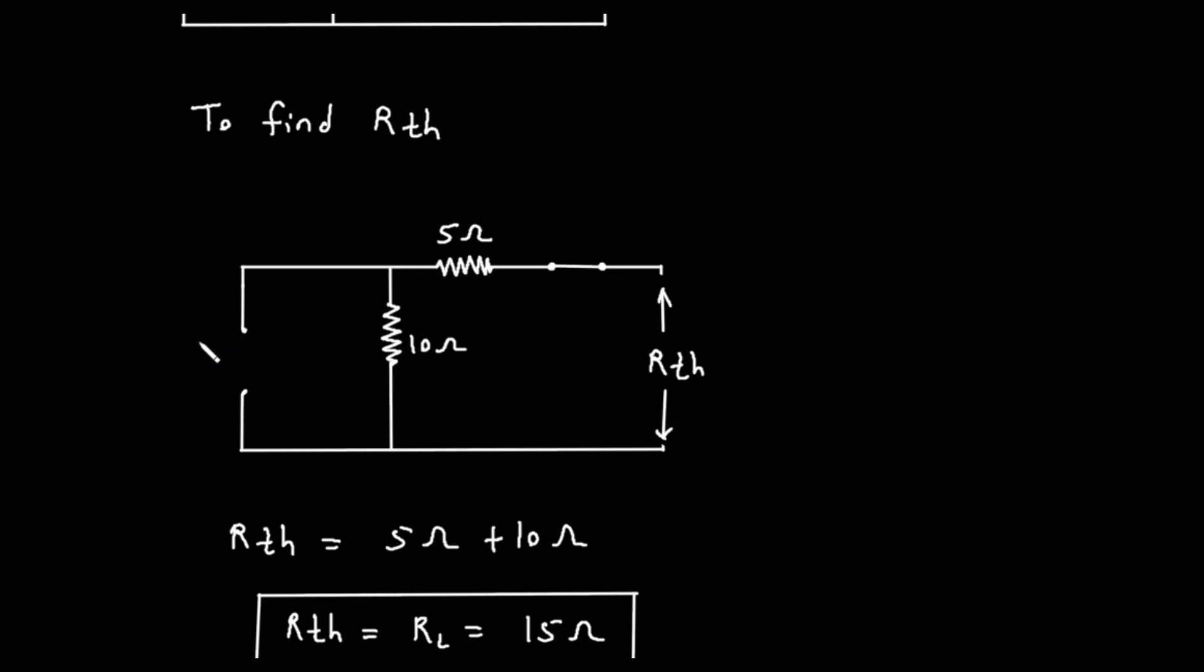This means the connection is broken, and no current can flow in that part of the branch. Next, we take the 15V voltage source and replace it with a short circuit, which is just a wire. After making these changes, we have a new, simplified circuit for the purpose of finding the equivalent resistance.